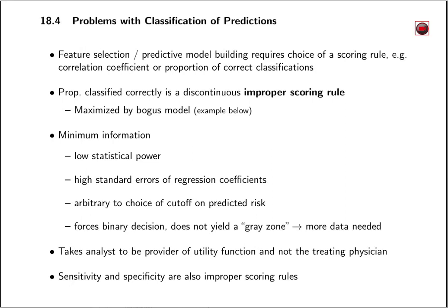Equal to the rise in popularity of machine learning methods is the rise in confusion about classification and classification accuracy. For any method of developing predictions of outcomes, one has to settle on a measure of predictive accuracy to optimize. That measure might be mean squared error of predictions, it might be a correlation coefficient, a rank correlation coefficient, or many other choices.